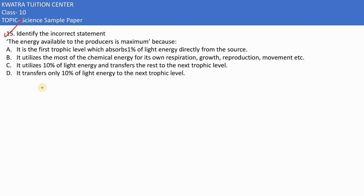Now in the 15th part, it says identify the incorrect statement out of these four. There is one incorrect statement. They are saying in the first part, the energy available to the producers is maximum. In which situation is energy available to producers maximum?